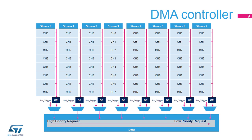Each stream channel is connected to only one peripheral request. A peripheral request can be connected to different streams to guarantee more flexibility during configuration. A channel request multiplexer allows us to have only one channel active per stream. Software must ensure that a peripheral request is enabled only on one stream. Software triggers available on DMA2 can only perform memory-to-memory transfers.